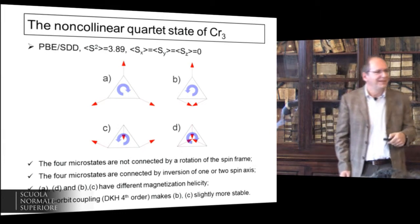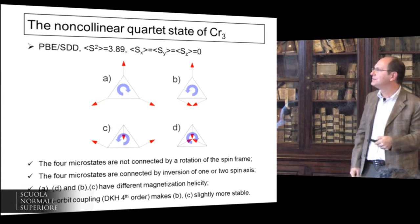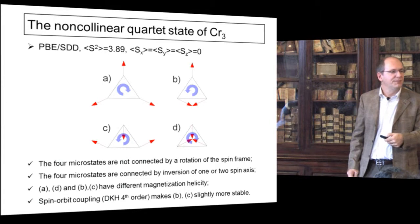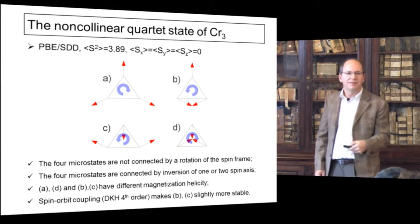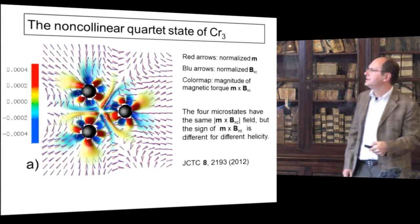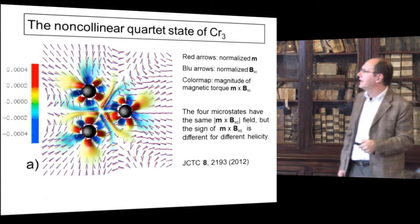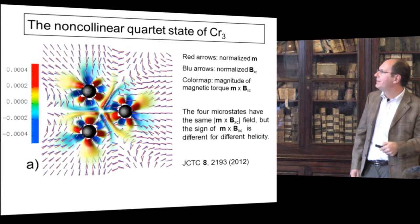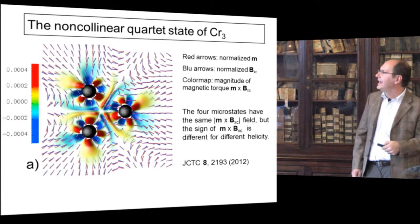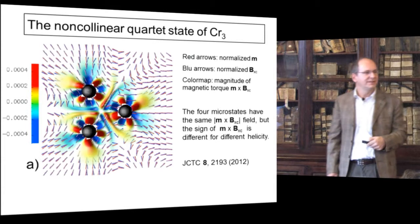What all of this means, I'm not entirely sure, but it was pretty neat and stuck together nicely. All these microstates have the same expectation value, so I don't even know how to distinguish them from the calculation, because the energy is the same and the expectation values of the spin operators are the same. This is the nice picture: for state A, the red arrows are the normalized magnetization and the blue arrows are the normalized exchange-correlation field — they are not everywhere collinear, they exert a torque. The color map is the magnitude of the torque.